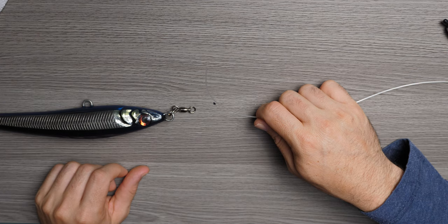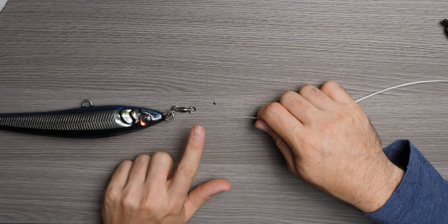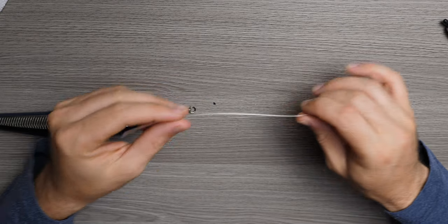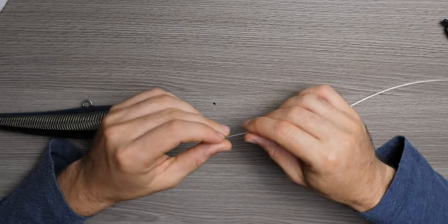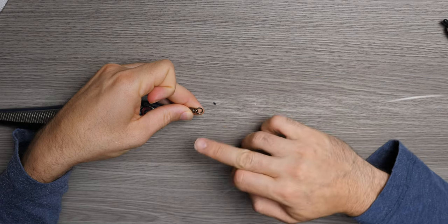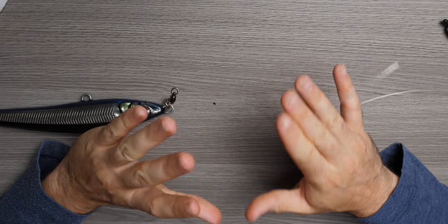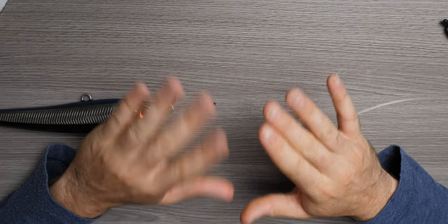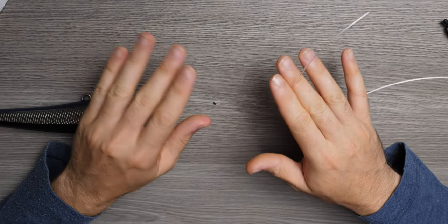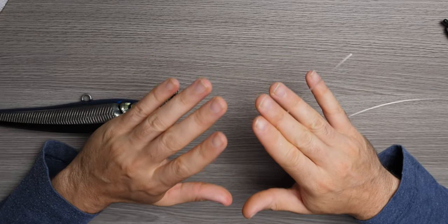So without wasting any more time, let's dive right into it. Alright guys, so we're going to start off, this is the lure I'm going to be tying it to, split ring and a ball bearing swivel. This is our monofilament leader and we will be tying it through the eye of this ball bearing swivel. But before we start, I just want to make the first step very clear so no one makes a mistake because it's quite easy to make a mistake on the first step. So let's pay some special attention to that.